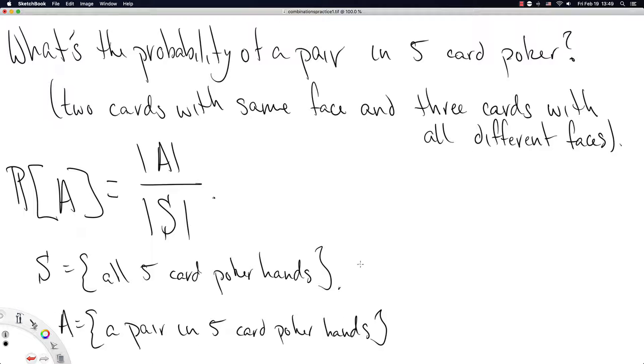We can calculate the cardinality of S fairly easily. There are 52 total cards, and we want to know the number of ways to get five of them. Calculating the cardinality of A is trickier, and that's what we'll focus on.